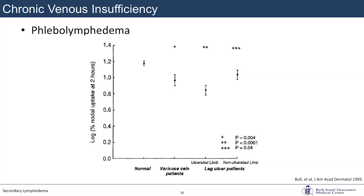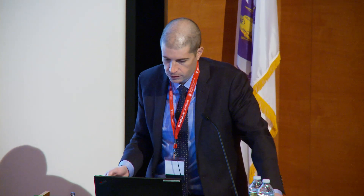A study from the 1990s examined patients thought to have chronic venous insufficiency using lymphoscintigrams, measuring lymph node uptake. Controls showed normal uptake in inguinal nodes. Those with varicose veins — relatively minor CVI — had lower uptake. Those with ulcerated limbs, the most severe form of CVI, had the lowest rate of inguinal node uptake. There is certainly an interplay between the lymphatic and venous systems.